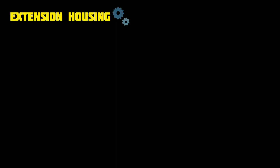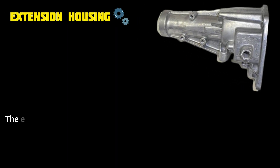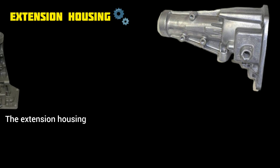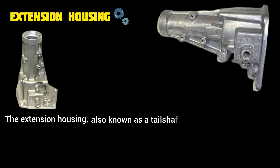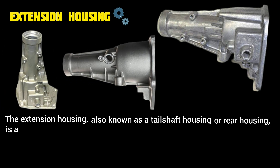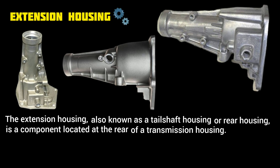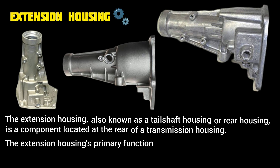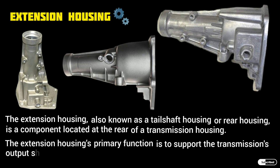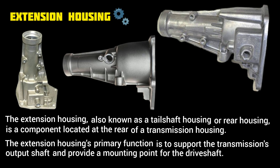Extension housing. The extension housing, also known as a tail shaft housing or rear housing, is a component located at the rear of a transmission. Its primary function is to support the transmission's output shaft and provide a mounting point for the drive shaft.